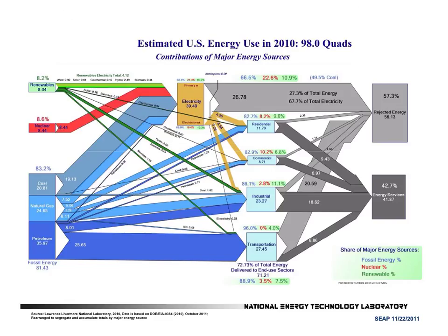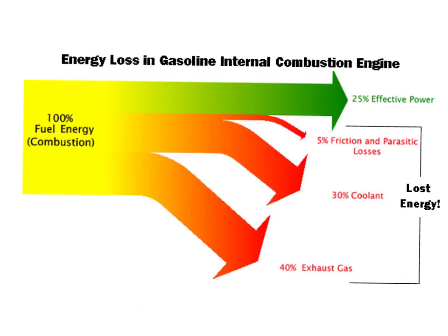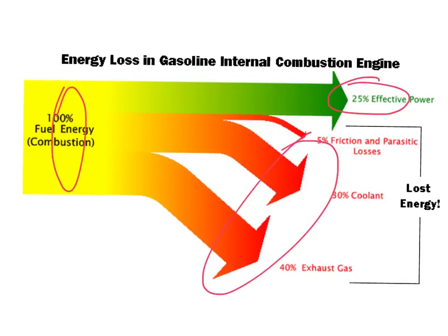These days, Sankey diagrams are used for all sorts of things. This is a complicated example where they have analyzed the entire energy usage in the United States. Here's a simpler diagram comparing the energy going into a gasoline internal combustion engine versus the energy that comes out — we can see that 75% of the energy is lost and cannot be converted into useful work.